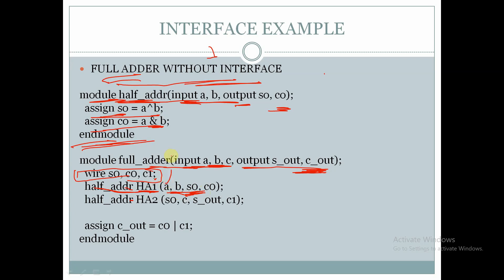Here a will be copied to a, b will be copied to b, s0 will be copied to s0, and c0 will be copied to c0. So s0 will be assigned as a XOR b and c0 will be assigned as a AND b. Here we are taking another instance of half adder ha2 and we are passing the output instances s0, c, s_out and c1, and we are assigning the value of c_out as c0 OR c1.